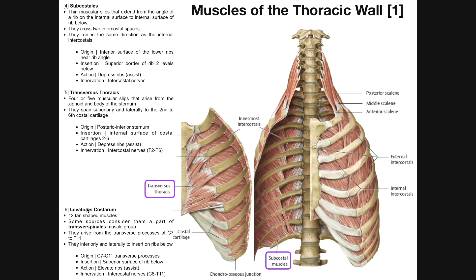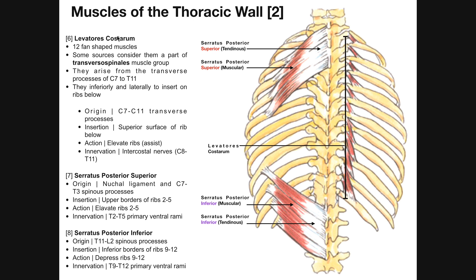The sixth muscle is the levatores costarum. We're going to switch images to see it. Levatores costarum is a series of 12 fan-shaped muscles that lie in between the ribs. They're sometimes considered a part of the transversus spinalis muscle group — recall from the deep muscles of the back that transversus spinalis included the semispinalis, multifidus, and rotatoris. Some sources include levatores costarum with them.